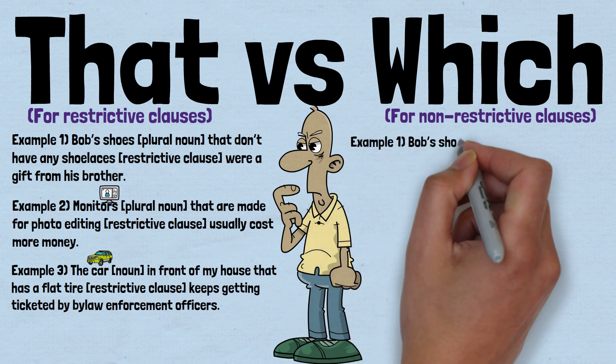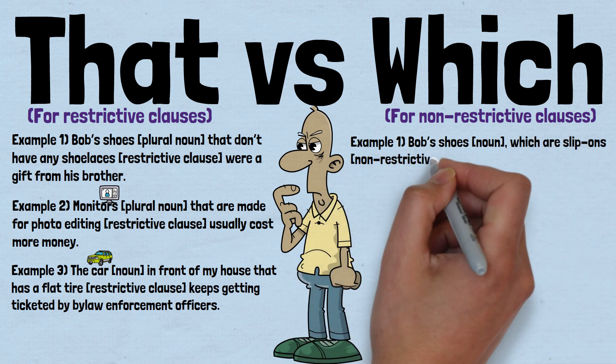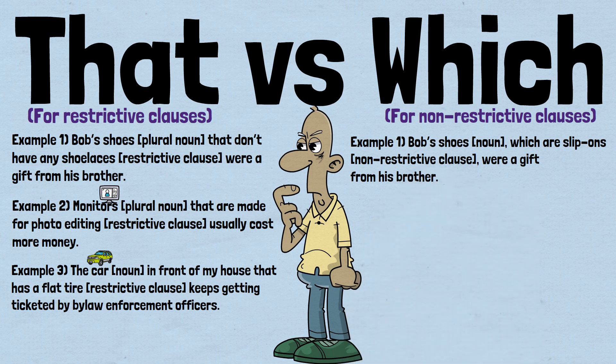Example 1: 'Bob's shoes, which are slip-ons, were a gift from his brother.' Here, the information about Bob's shoes being slip-ons — or shoes without laces — is not necessary to understand the meaning of the sentence. In this example, Bob may only have one pair of shoes, and the extra information offered by the non-restrictive clause does not clarify that. Therefore, we separate the non-restrictive clause with commas and use the word 'which' to introduce it.